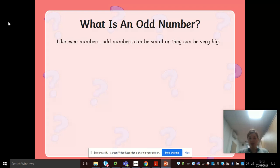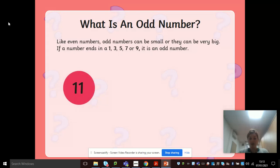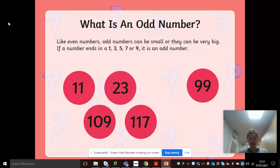Okay, like even numbers, odd numbers can be small or they can be very big. If a number ends in a one, three, five, seven or nine, it is an odd number. And then there's just some examples there that you can have a go at reading yourselves.